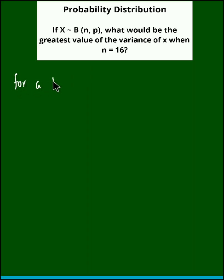Now we know that for a binomial distribution, maximum variance or the highest value of variance occurs at p equal to q equal to 0.5, that is when the distribution is symmetric.